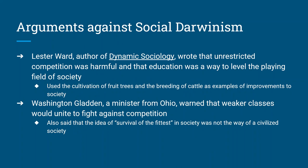There were many arguments against Social Darwinism. Most centered around the idea that education is the great equalizer — if everybody is educated, then everybody has a chance in society. Others said there's a difference between survival of the fittest in the animal kingdom versus in civilization, and that in a civilized people, survival of the fittest should not exist. Lester Ward and Washington Gladden were two of the big anti-Social Darwinist speakers.